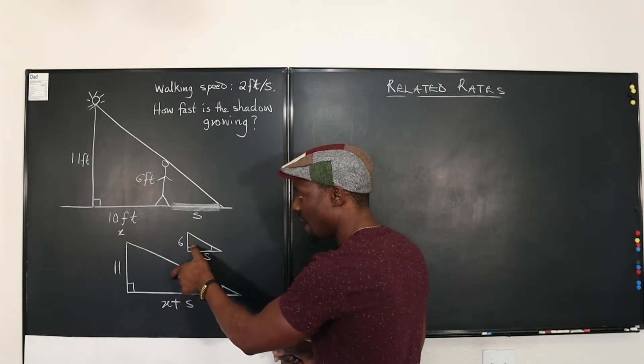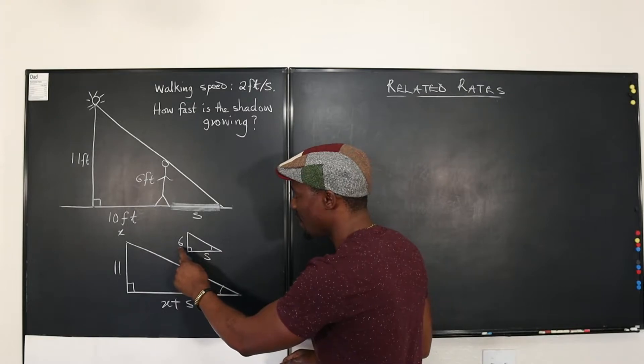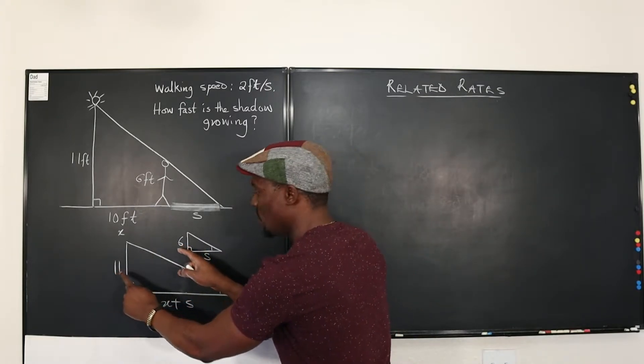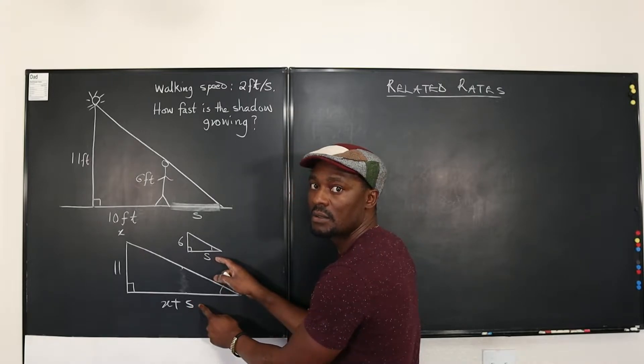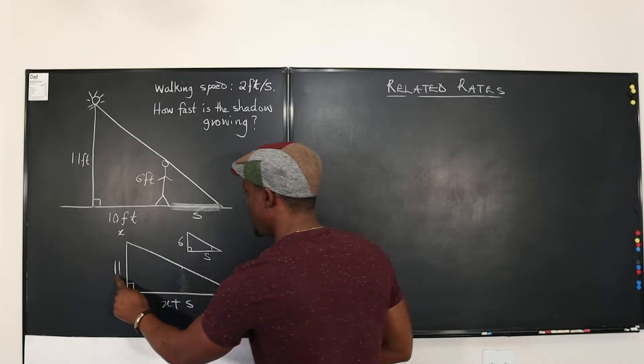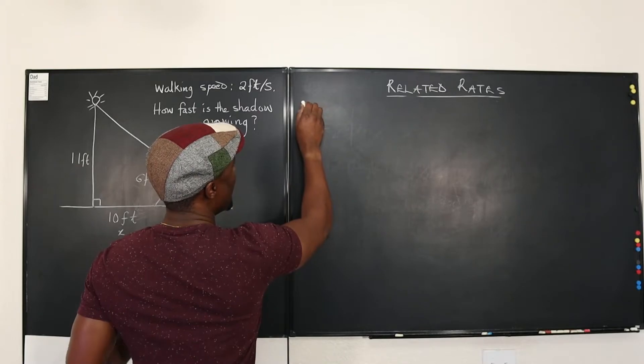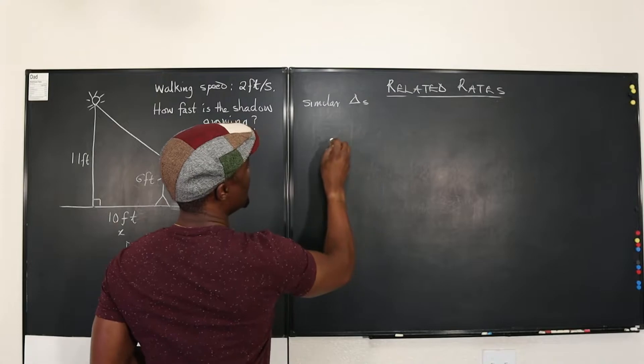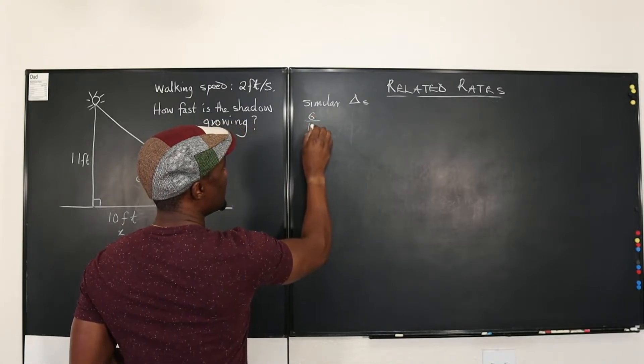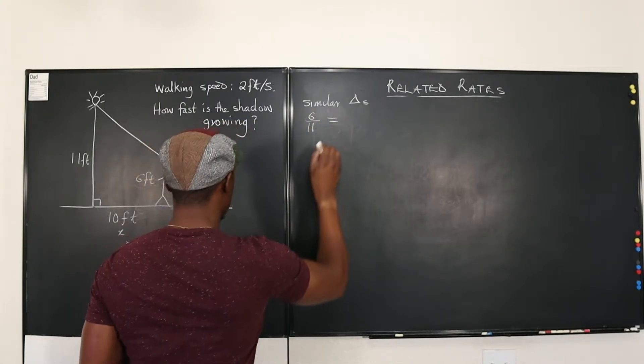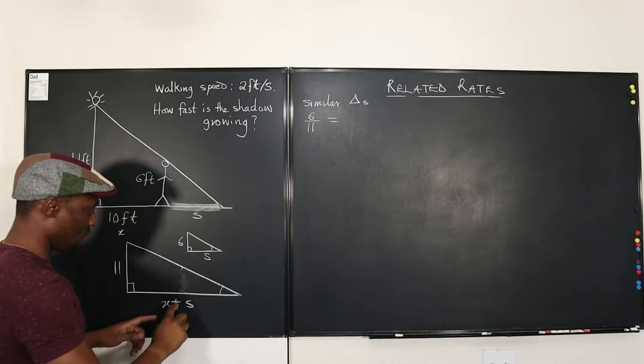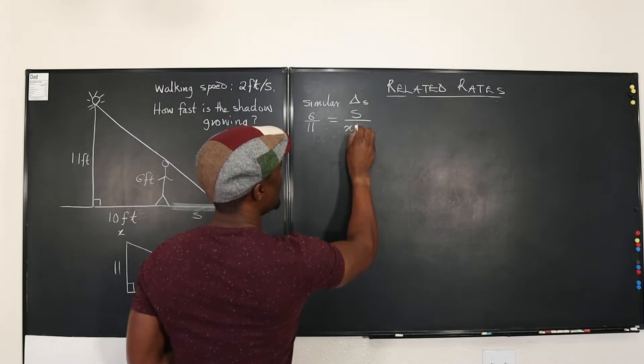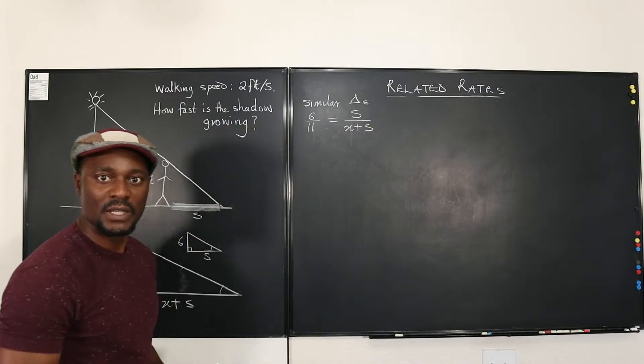When both triangles are similar, what you see is the ratio of the corresponding sides will give you a constant. So I say 6 over 11. Similar triangles, which say 6 over 11 is equal to S over X plus S. S over X plus S. That's one way to connect it.